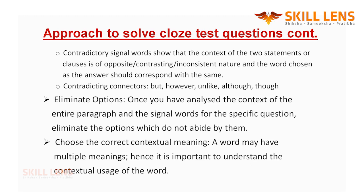The next approach is to eliminate options. If there are four options given to us, it is always wise to eliminate options that don't fit the paragraph at all. Once we understand the theme or context of the paragraph and the vocabulary required, and we are guided by signal words, it becomes very easy to eliminate those words that don't abide by any of the approaches we have already applied.